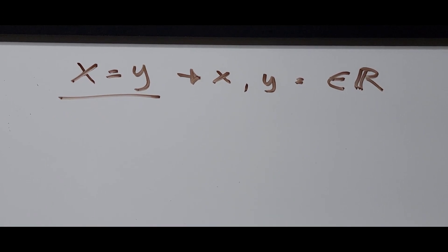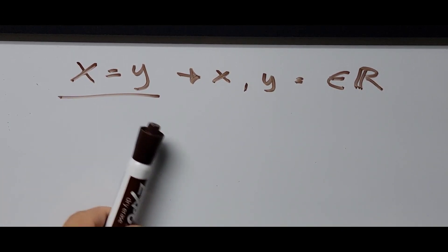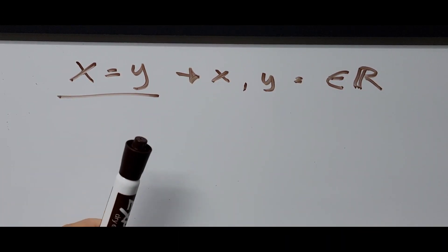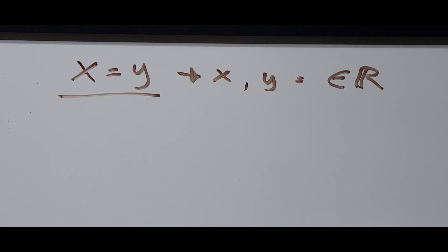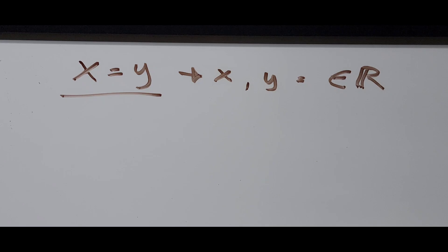Our answer is x equals y. This simply means that x and y can be any real number. If we assign a value — negative 1, negative 2, positive 2, positive 4, or any integer or real number — it should satisfy the original equation.